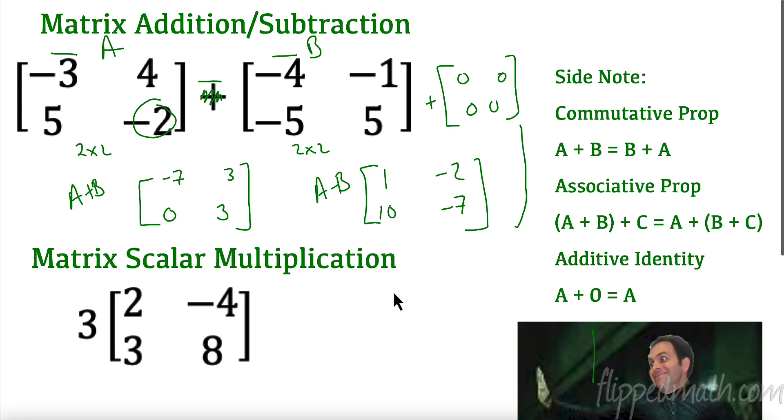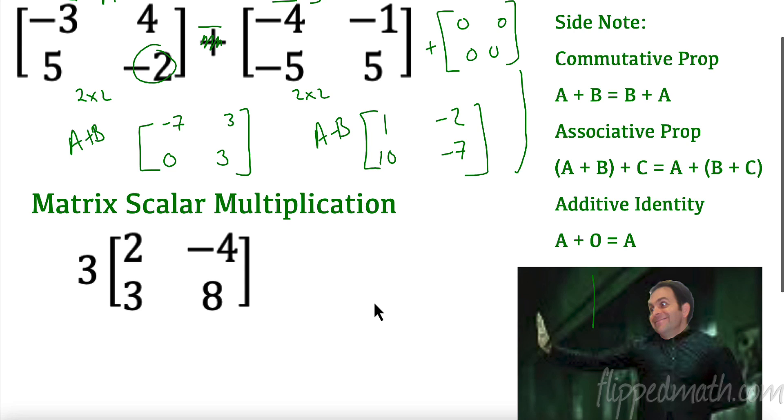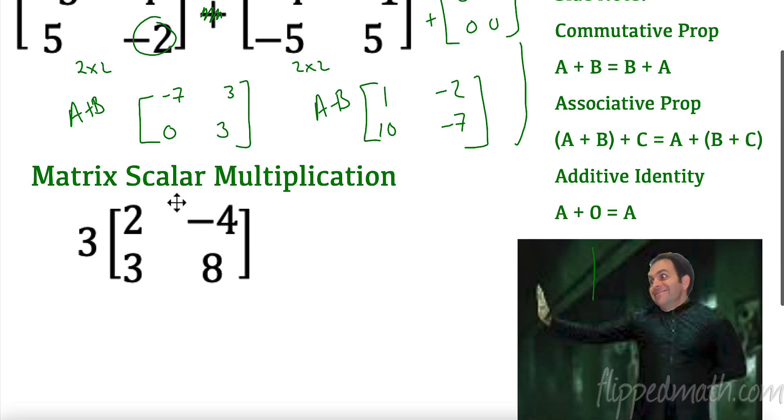Alright. Now let's talk about multiplication. Let's talk about the easy multiplication first. First, we have scalar multiplication. And what scalar multiplication is, is it just takes a scalar on the outside and it multiplies every component on the inside. So we're going to scale everything in here by a factor of 3. So I would get 6, negative 12, 9, and 24. That would be my scalar multiplication. Not too bad, right?